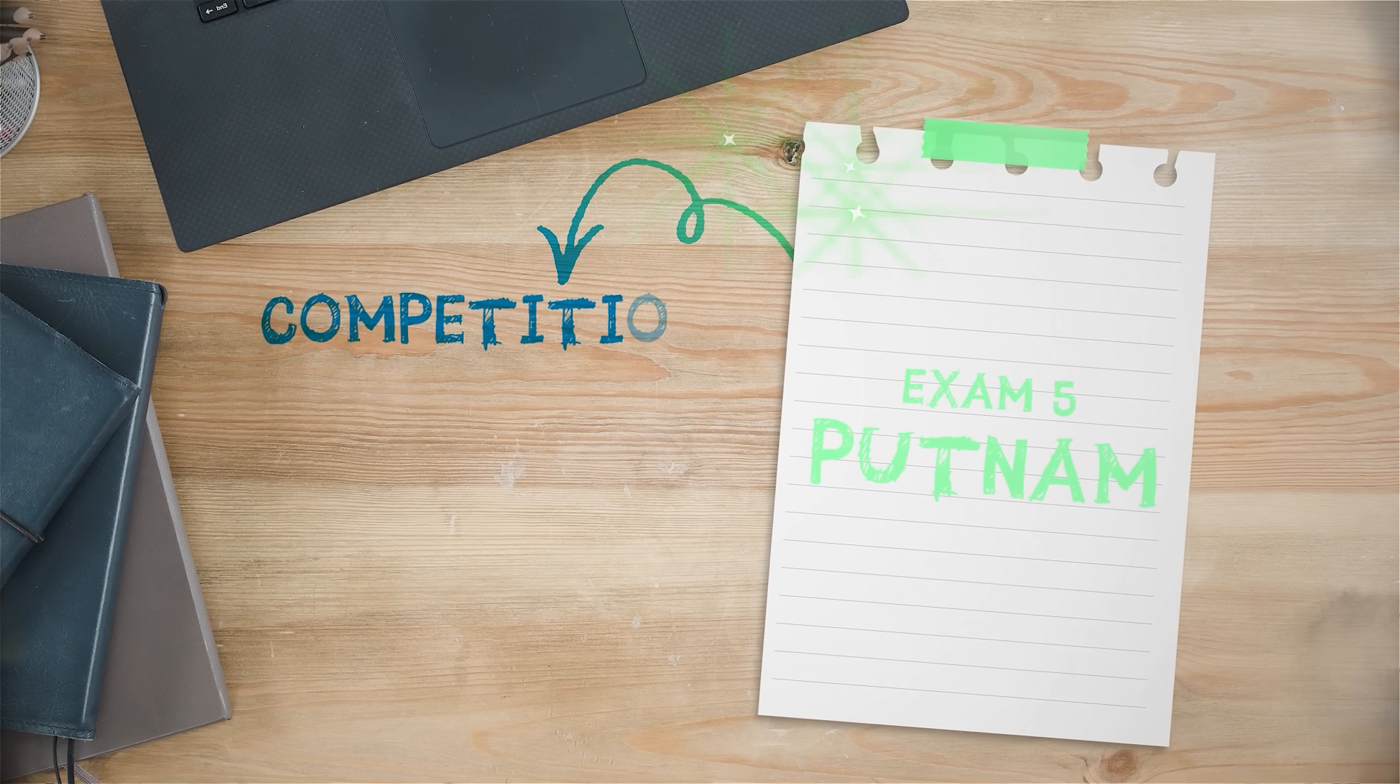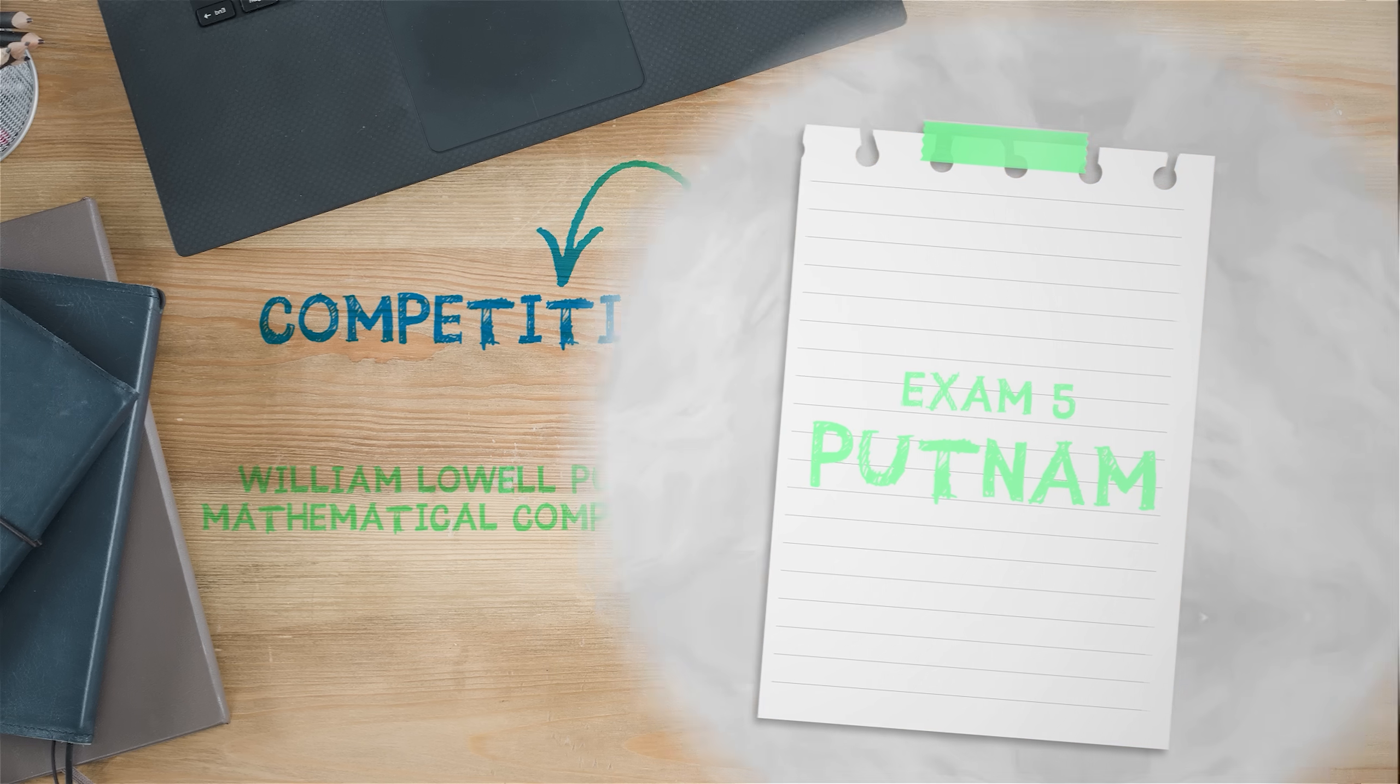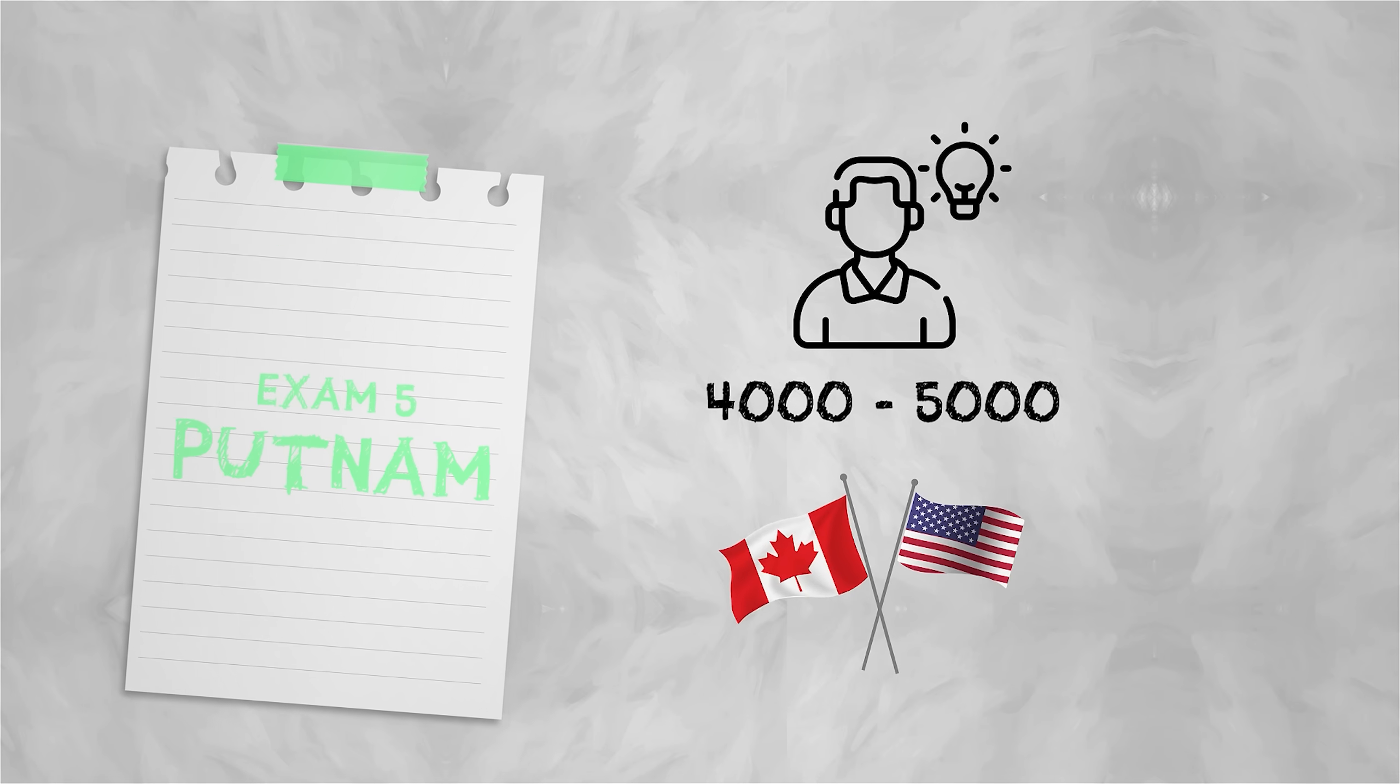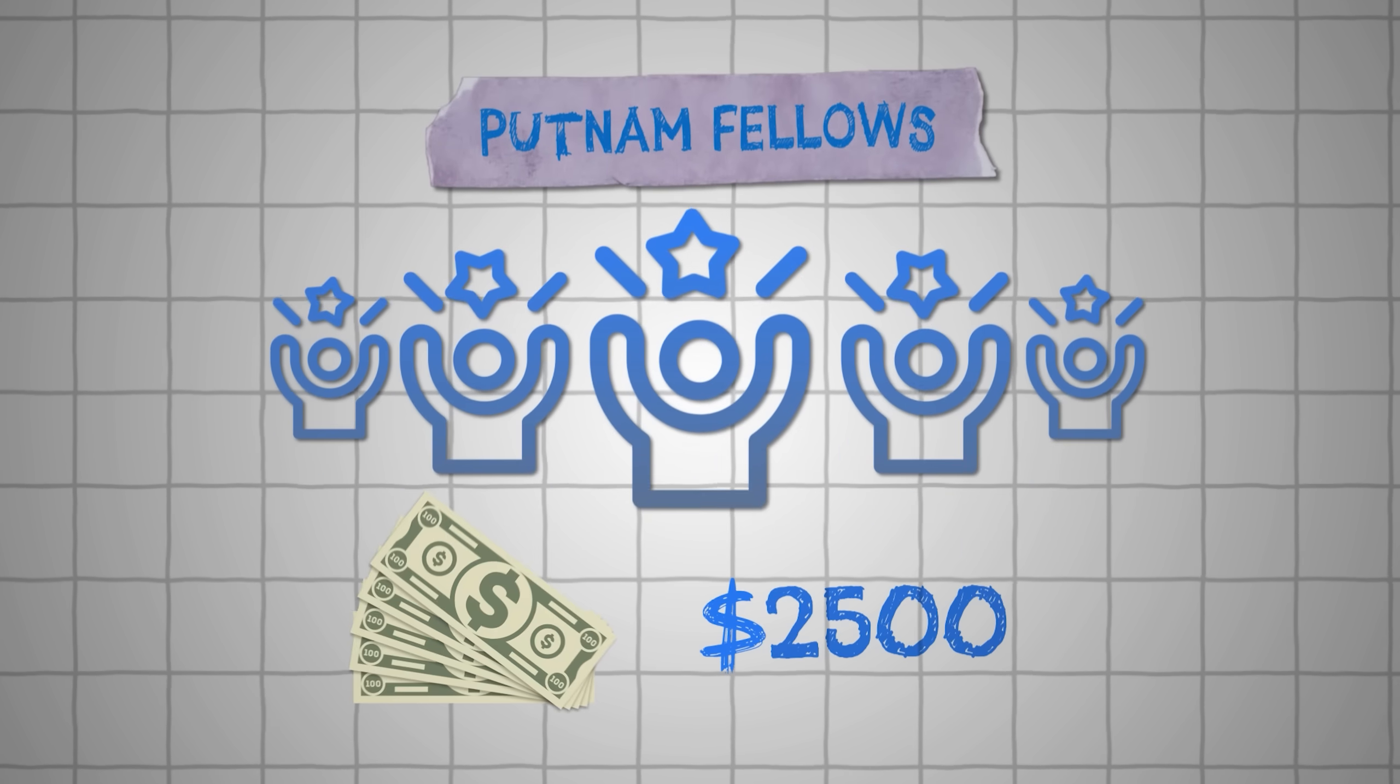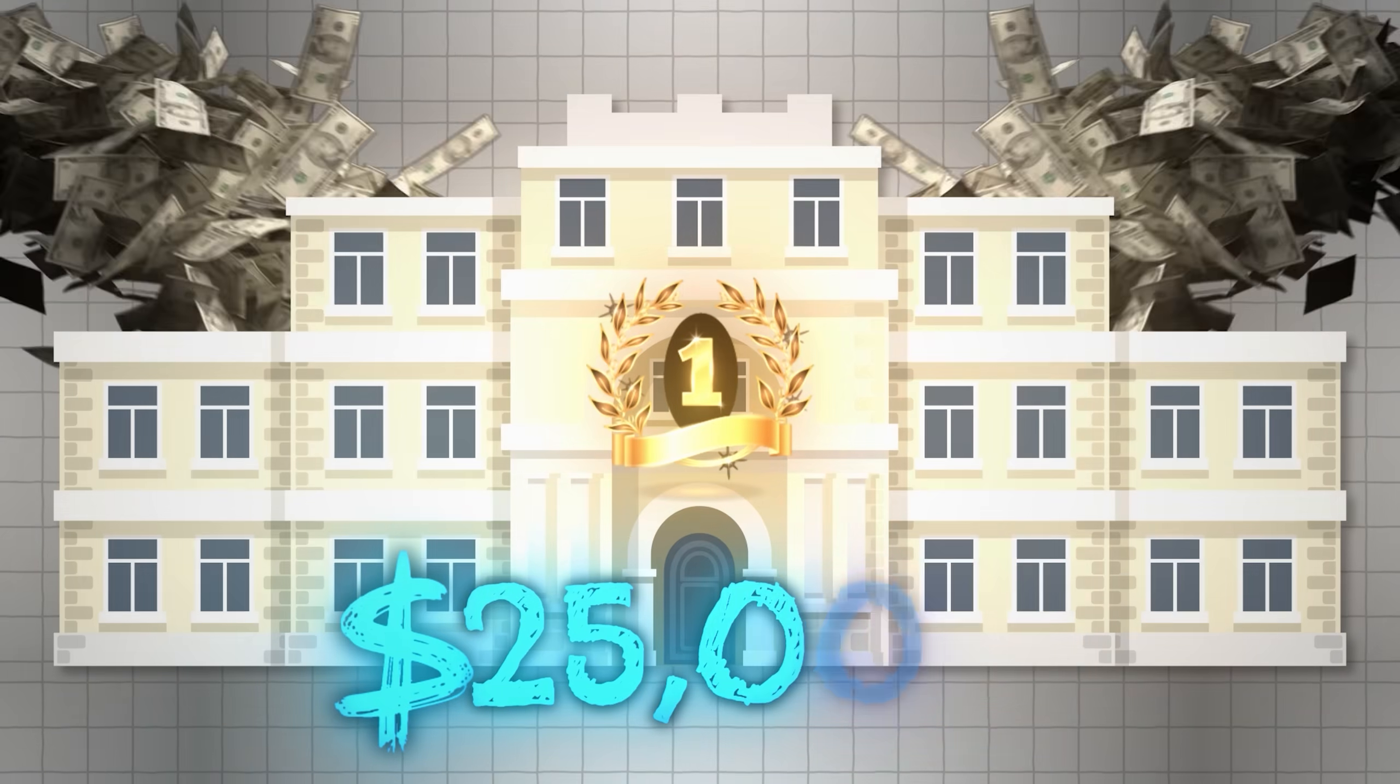Well, first of all, the Putnam is actually a competition. The full name of it is the William Lowell Putnam Mathematical Competition. Every single year, 4,000 to 5,000 of the brightest undergraduate students from the U.S. and Canada take this exam. And it has one of the craziest statistics of any exam we've talked about today. The median score is a zero. A zero.